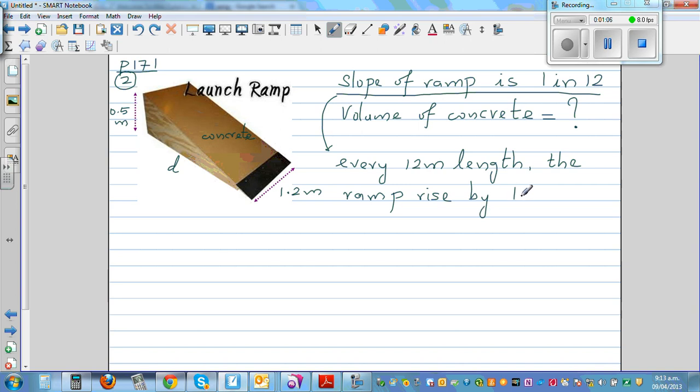So that's what this ratio is. Slope of the ramp is 1 in 12, that means the height is 1 meter for every 12 meters. So if the height is 0.5 meter, how much would be the length? The length would be 0.5 times 12.